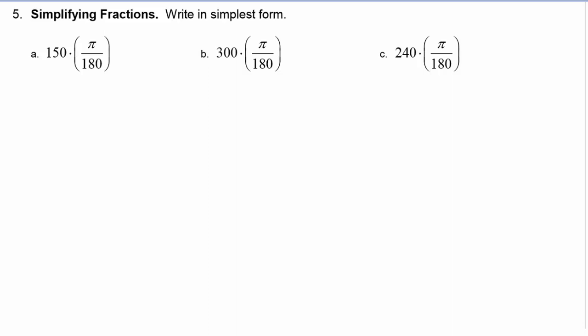If we look at example A, we see right off the bat that 150 and 180 have 10 in common. So it's not the greatest common factor, but if you see a factor that they have in common you can start with that factor. So if I divide 150 by 10 I would get 15. If I divide 180 by 10 I would get 18.